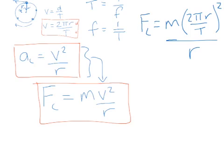So we're going to reduce this down to a single equation. So I've still got m, we've got times by 4 now because it's 2 squared, times by π², times by r² over T² times r.